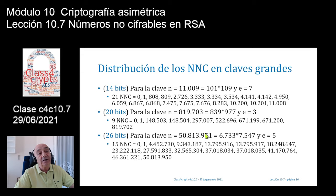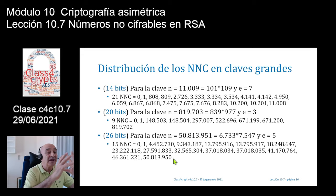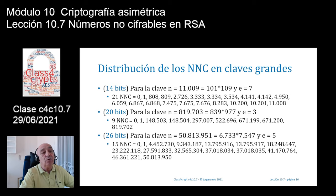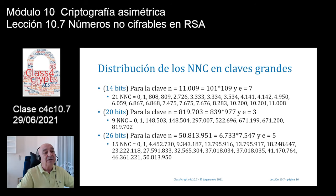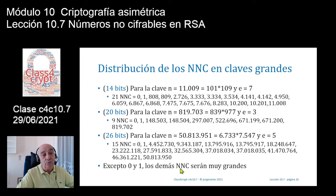Para una clave de 26 bits, la clave son 50 millones 813.951 con primos P y Q. Elijo la clave pública 5 y tengo 15 números no cifrables. Después del 0 y el 1, los números son 4 millones, 4 millones, 9 millones, 13 millones, 13 millones, 18 millones, 23, 27, 32, 37, 41, 46 y 50 millones. Se comienzan a ir desplazando hacia la derecha.